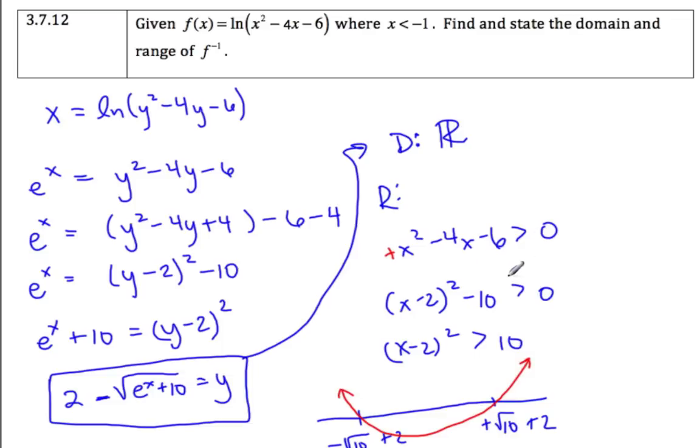So the domain greater than 0 is this piece here and this piece over here. So if I said x is greater than negative 1, I would take this piece, and since I said x is less than negative 1, I'm taking this piece.